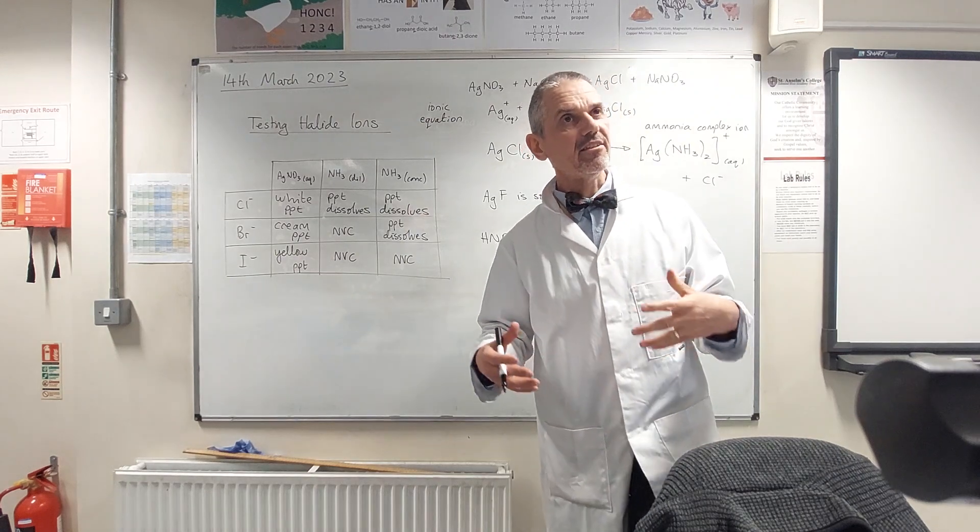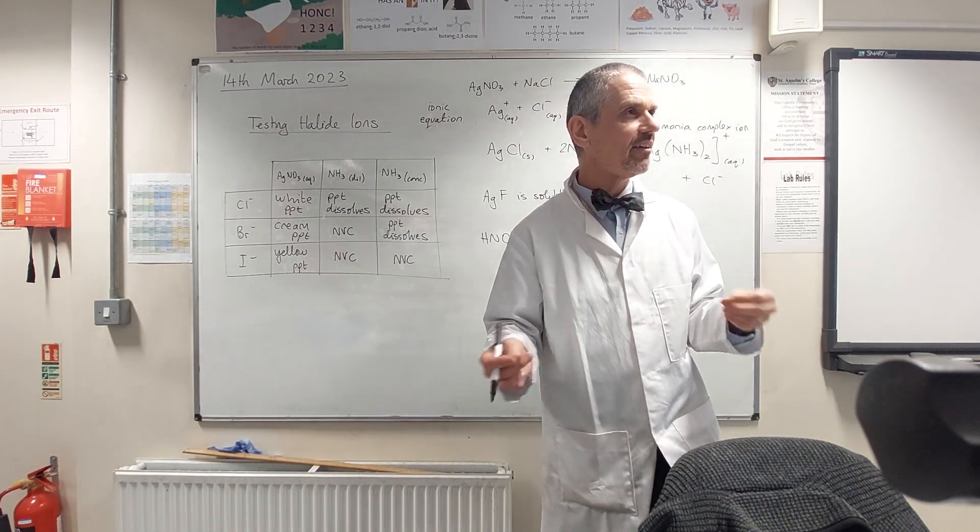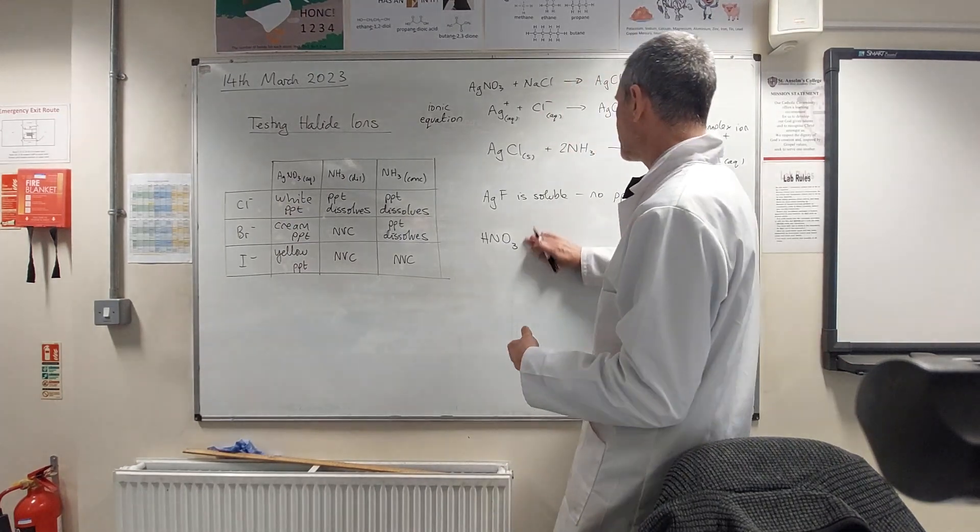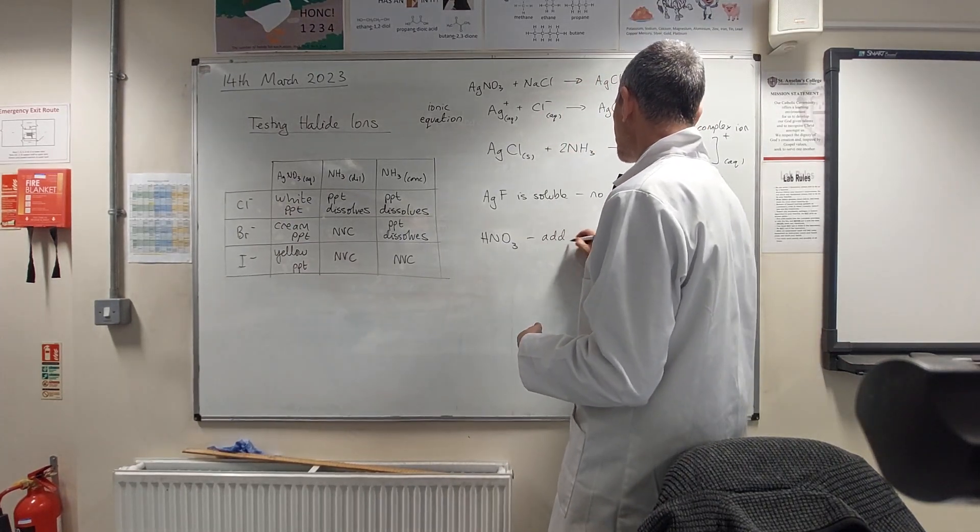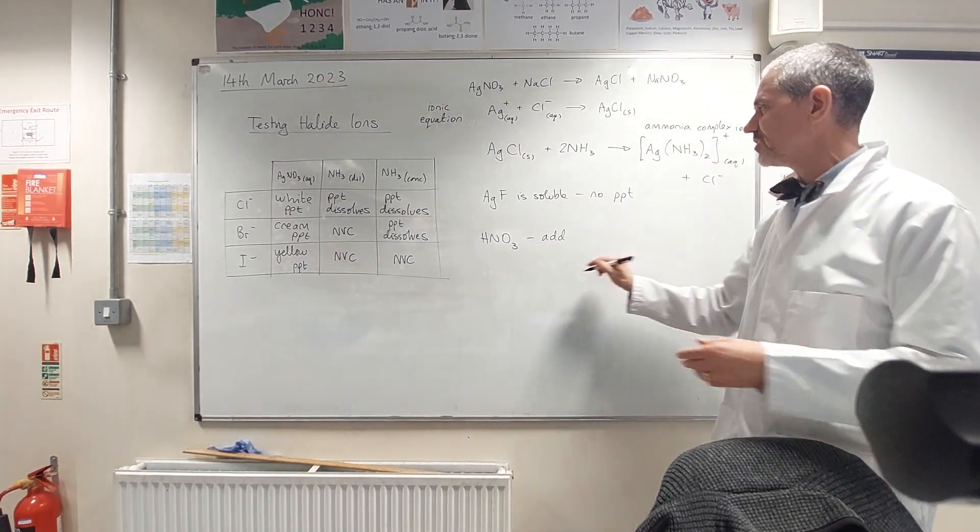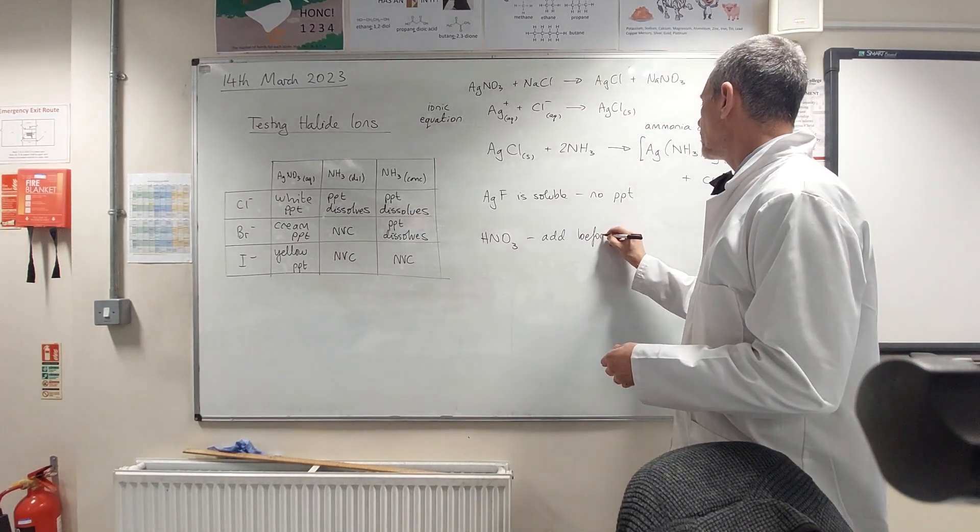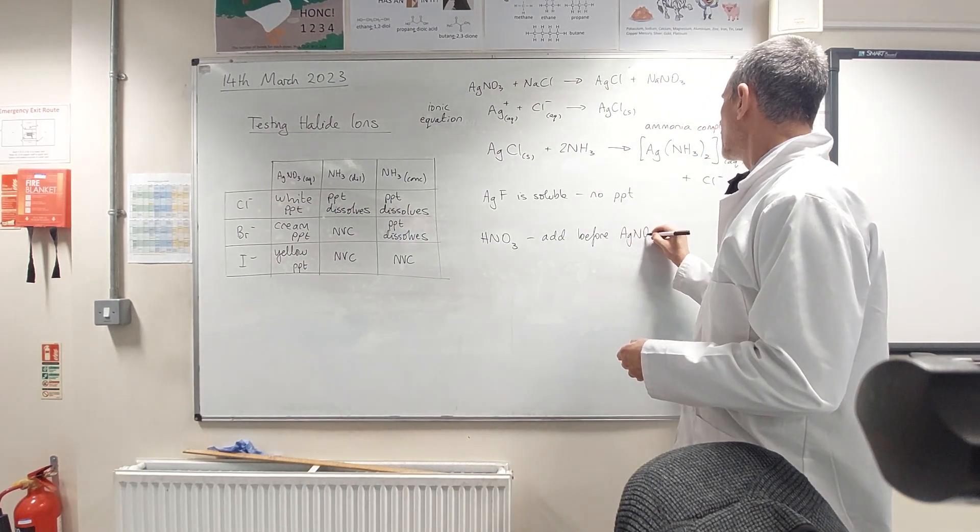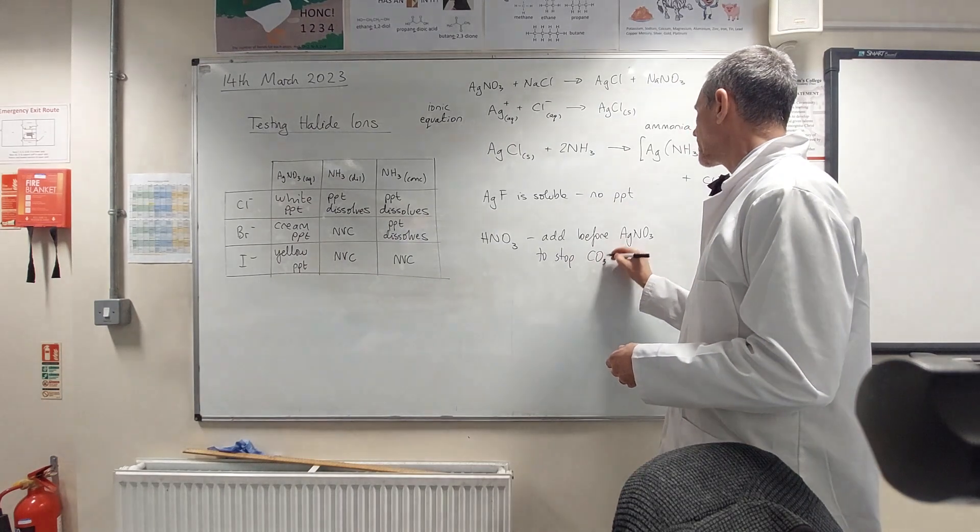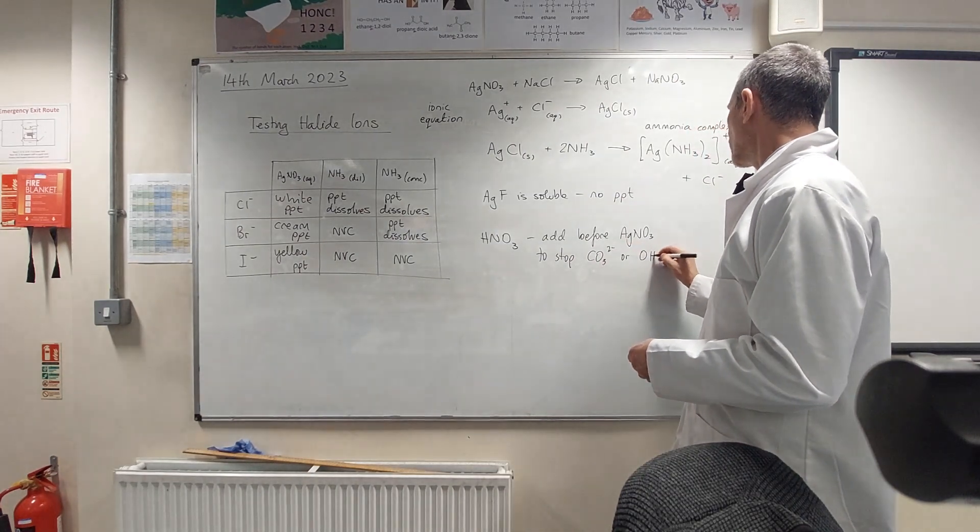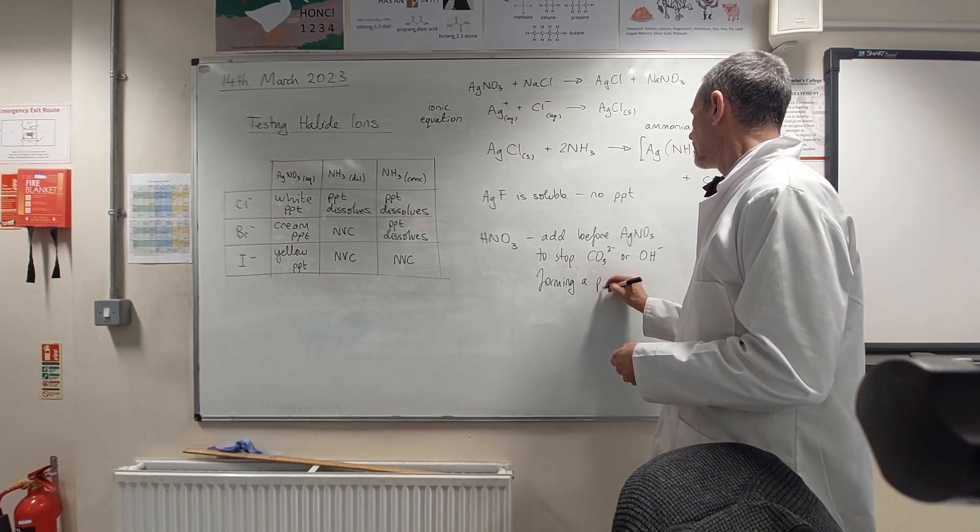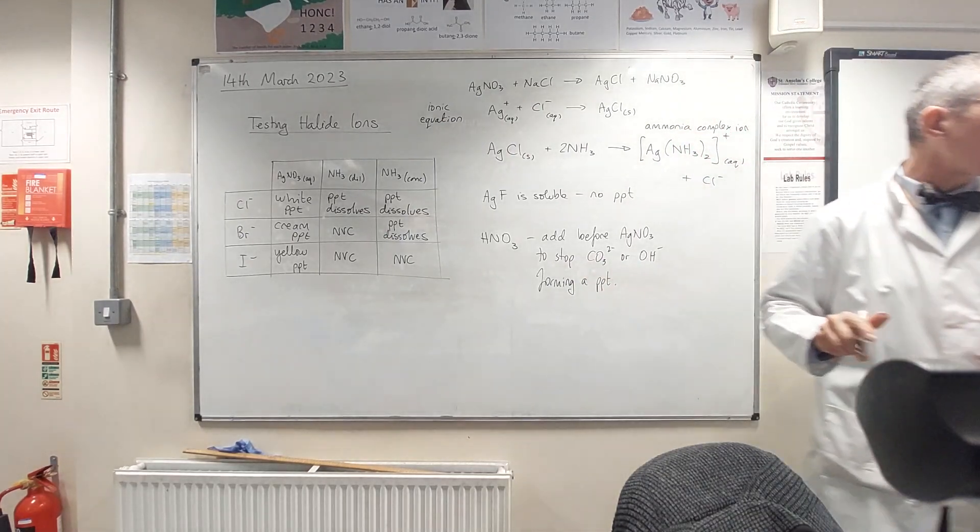Now, if you're only testing halides, that's not a problem. But if you're testing some unknown solution X, which you will be for your required practical four, then you need to rule out anything else that might give you a white precipitate as well.